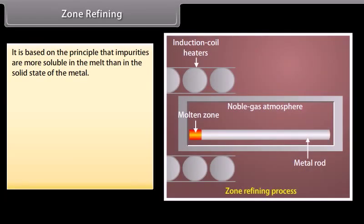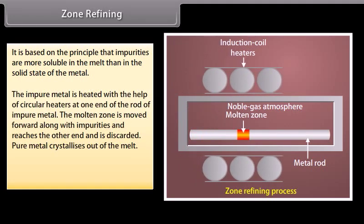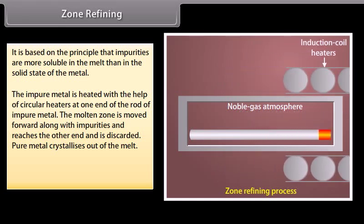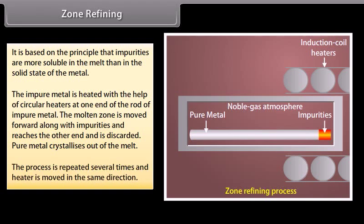Zone refining. It is based on the principle that impurities are more soluble in the melt than in the solid state of the metal. The impure metal is heated with the help of circular heaters at one end of the rod of impure metal. The molten zone is moved forward along with impurities and reaches the other end and is discarded. Pure metal crystallizes out of the melt. The process is repeated several times and heater is moved in the same direction. For example, it is used for purifying semiconductors.